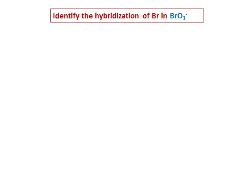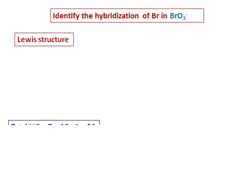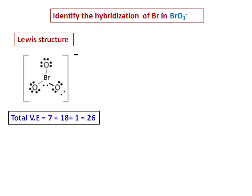Next, identify the hybridization of bromine in BrO3⁻. The total valence electrons are 26, plus 1 for the negative charge. The Lewis structure has a lone pair on the central bromine atom, making it an AB4 type molecule with three bonds and one lone pair.